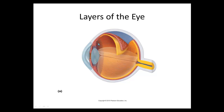The next layer of the eye is the middle layer. It's a dark layer called the choroid. The choroid has lots of blood vessels associated with it, making it a vascular layer full of rich blood vessels, and it's much darker in color.